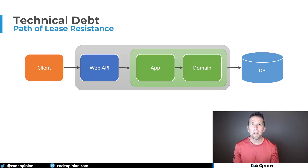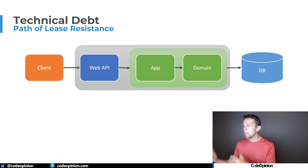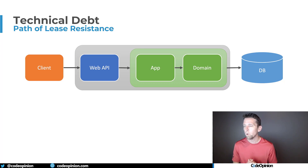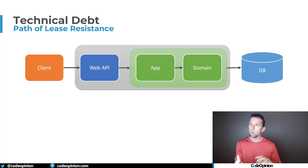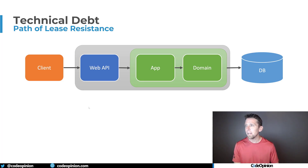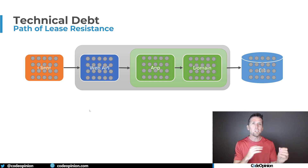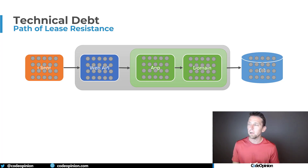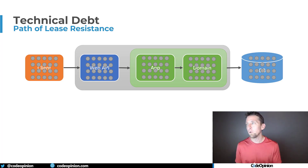So what do I really mean by the path of least resistance? Let's say we have some client — this could be a web app — and we have some web API, some HTTP API that we're interacting with, some application code, some domain, and our database. There are all these little pieces throughout all these different layers or tiers within our system, and when we need to make a change, generally we're making it through the entire stack.